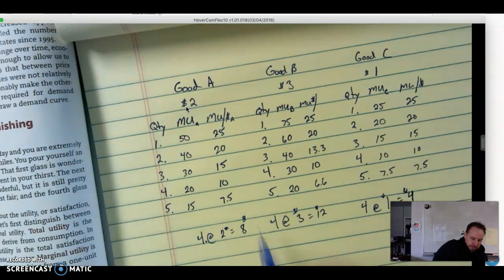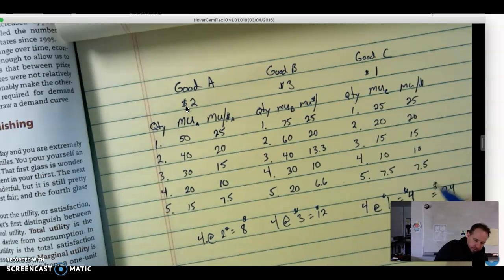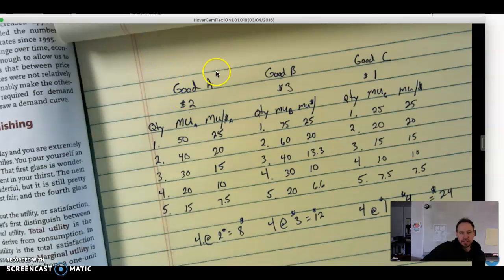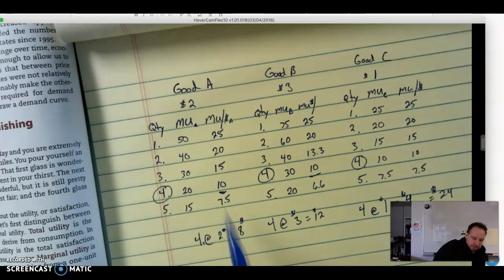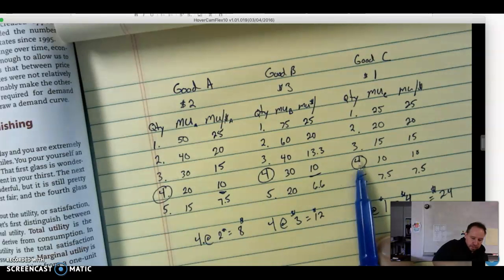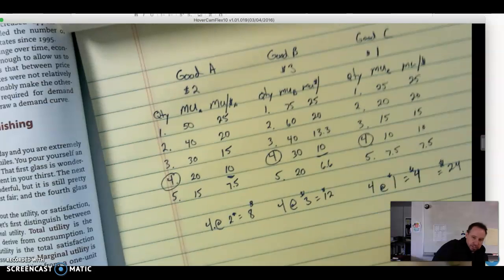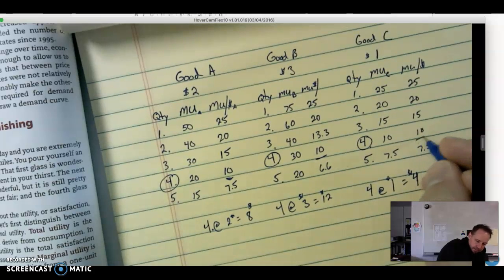8, 12, that gives me 20, 24. Add those up - $24. If I remember right, which I hope I do, yeah, $24 per week. So our quantities would be 4 of each because our corresponding marginal utility per dollar is 10 at each of those.